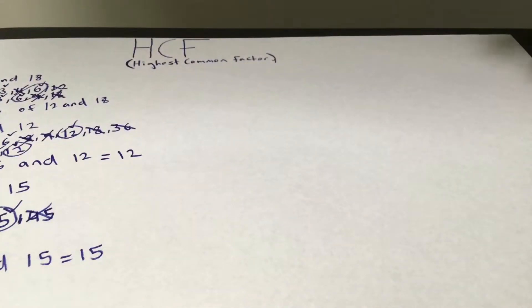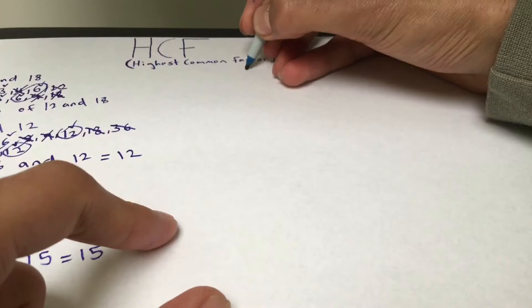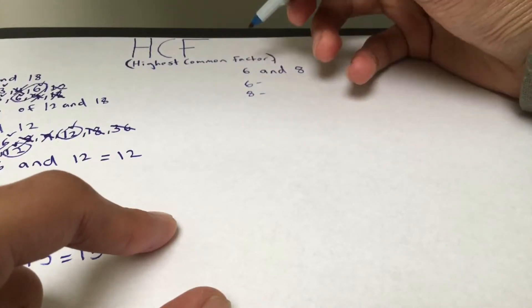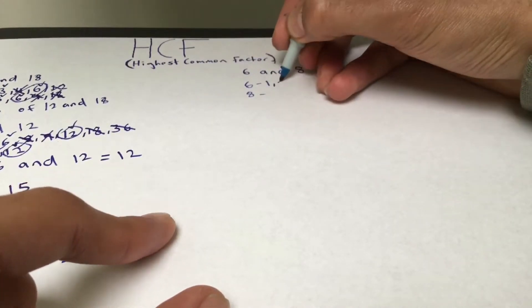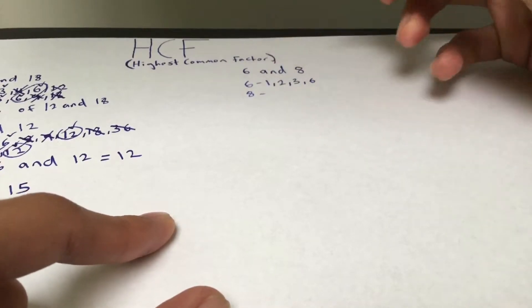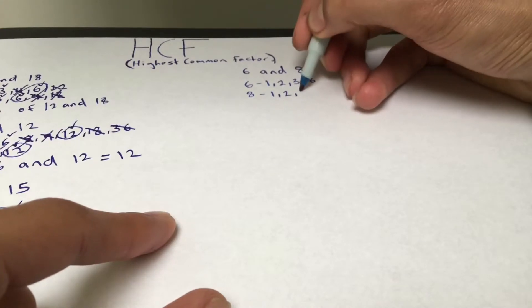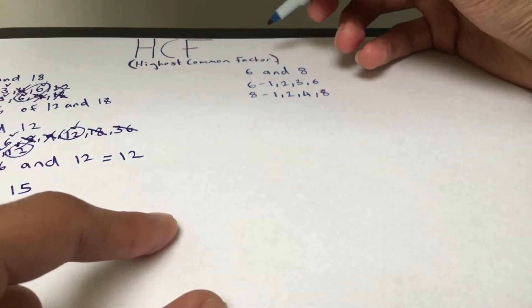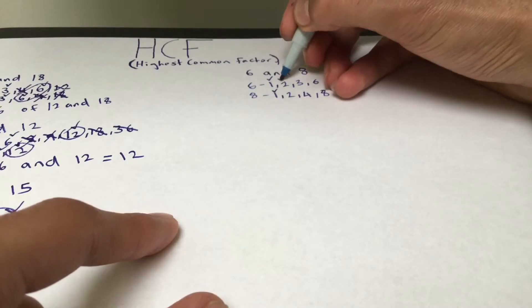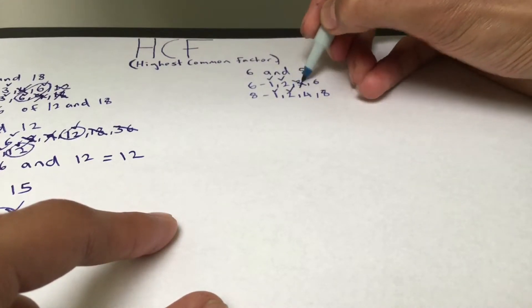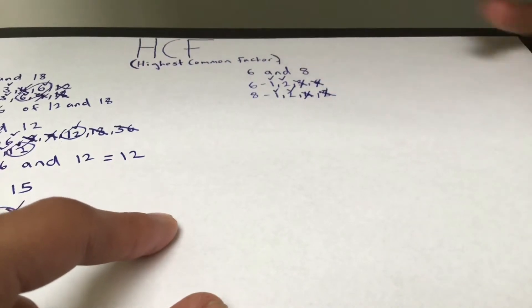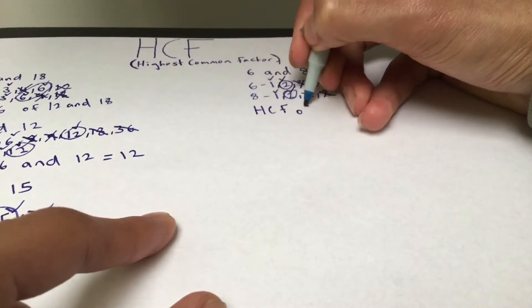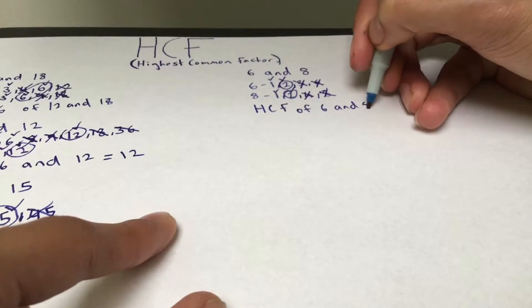Now let's move on to 6 and 8. For 6: 1, 2, 3, and 6. For 8: 1, 2, 4, and 8. We tick what's in common — 1 and 2 are present in both; 3, 4, 6, and 8 are not shared. In this case, 2 is our highest common factor, so we circle 2. The HCF of 6 and 8 gives us 2.